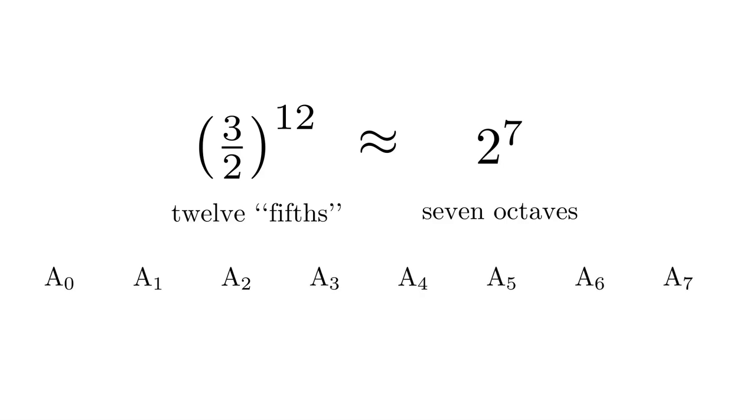So now I'll start at that same low note and I'll move up 12 fifths. Now it's an approximate equality, so those two notes aren't exactly the same. Let's listen to the result of going up 12 fifths again. And going up seven octaves, 12 fifths, seven octaves.